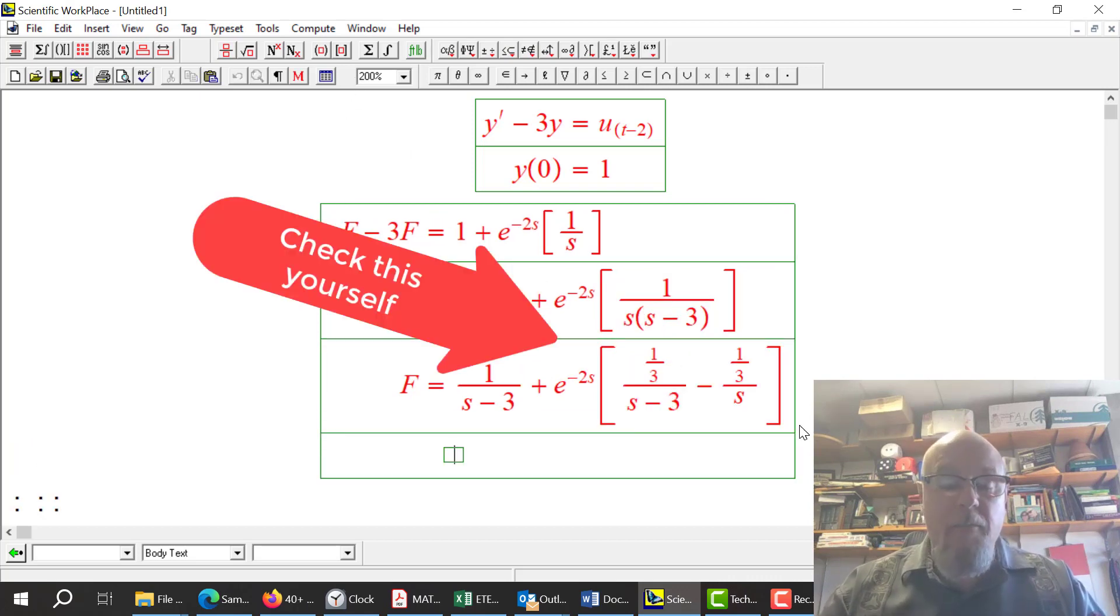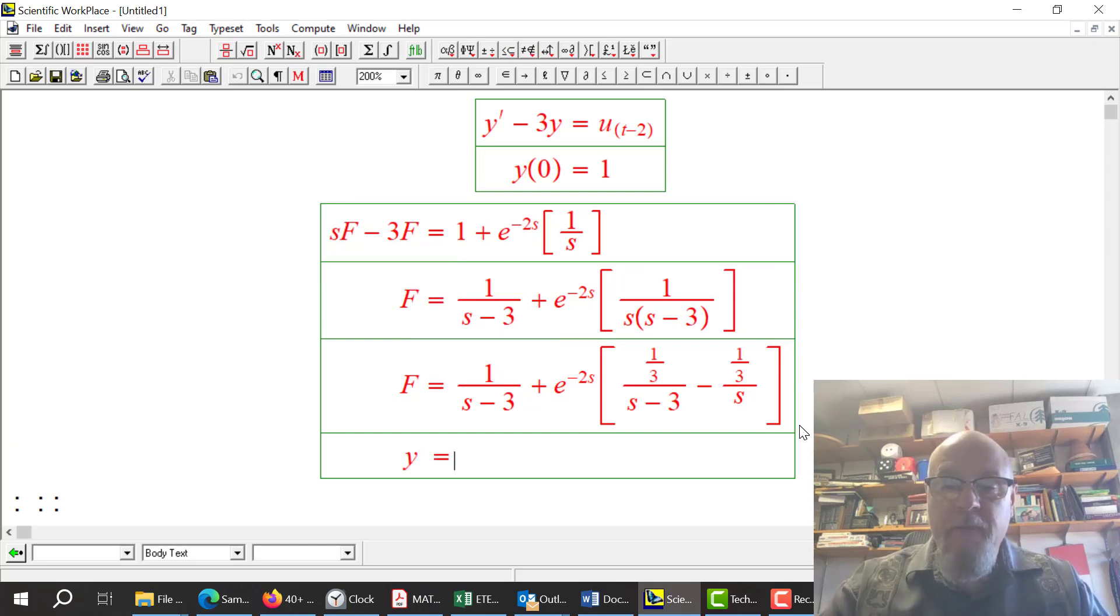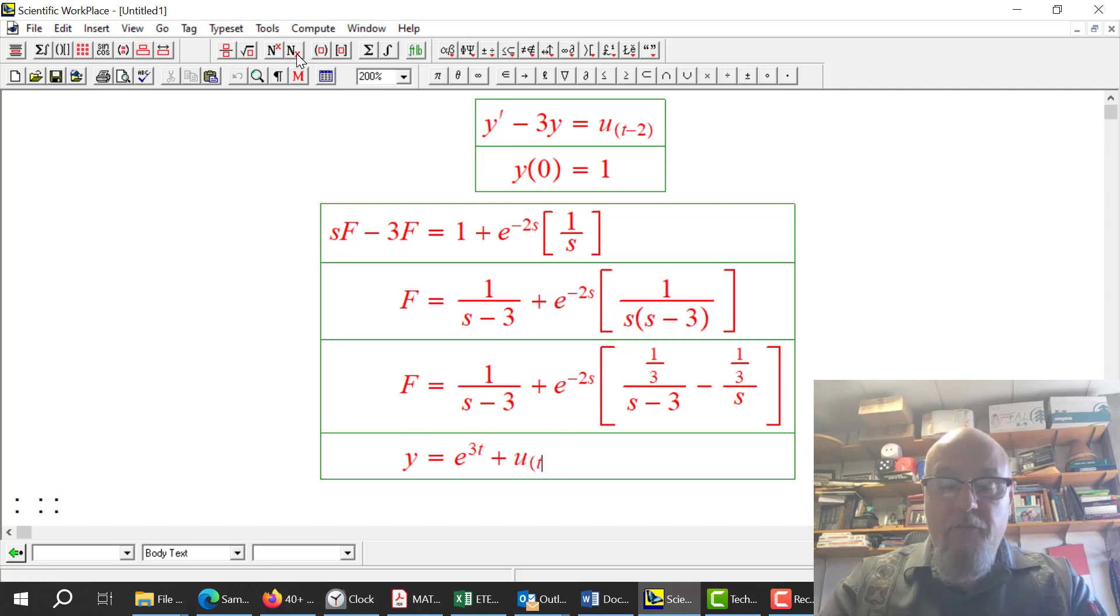And now we're set to un-Laplace. Inverse-Laplace, the un-Laplace of f is y. The 1 over s minus 3, that's going to be e to the 3t. The e to the minus 2s, that's going to become Heaviside step function turned on at 2 seconds.